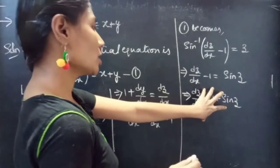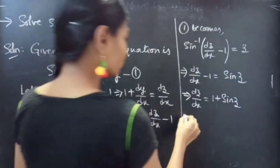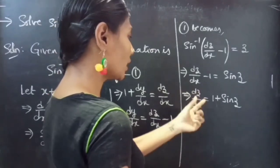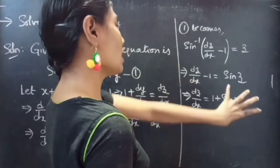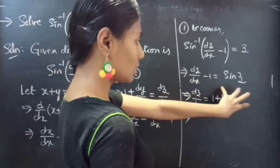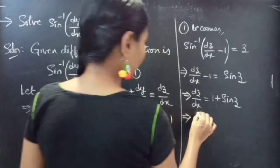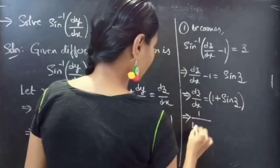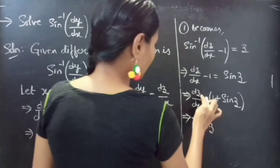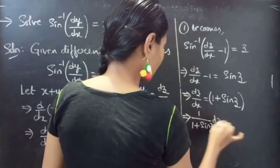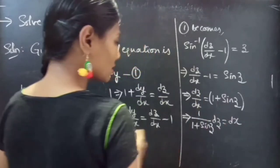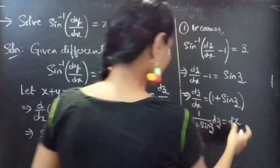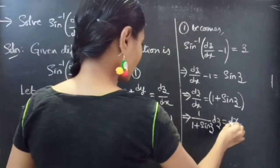Now we can write this differential equation in variable separable form. Since we have dz in the numerator, we take all z terms to the left-hand side and all x terms to the right-hand side. So in the LHS we get 1 over (1 plus sine z) dz, equals dx. We don't have any other x terms except the differential dx.